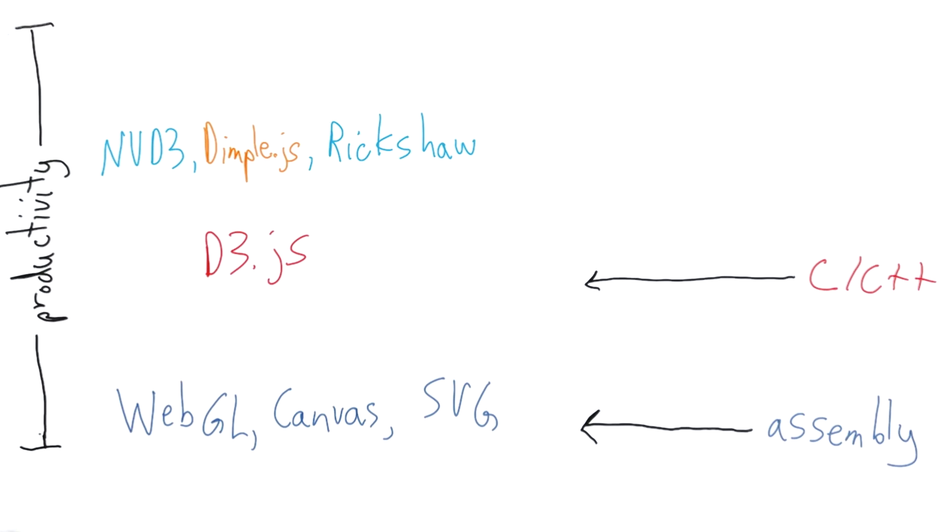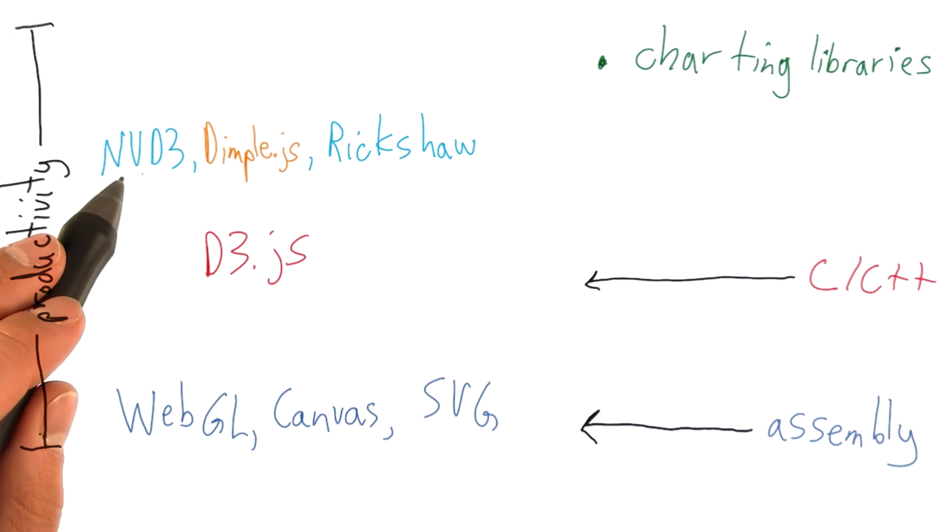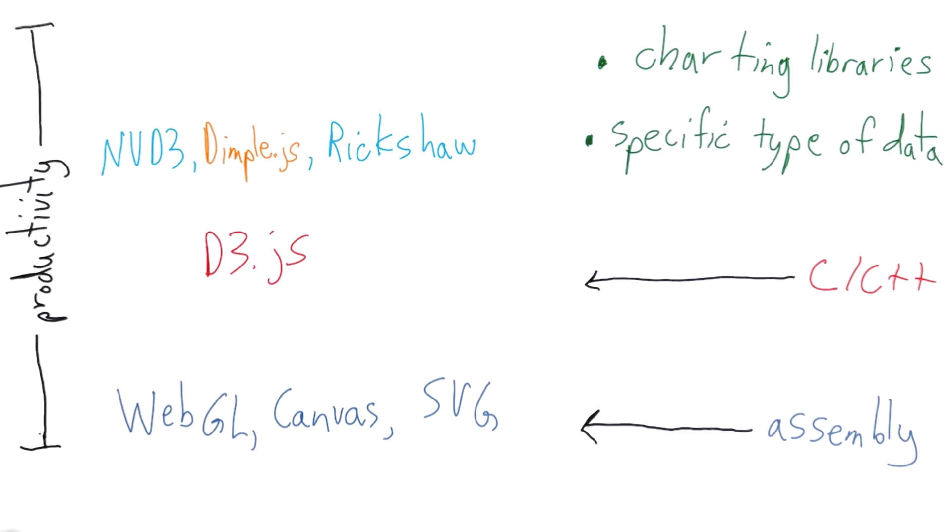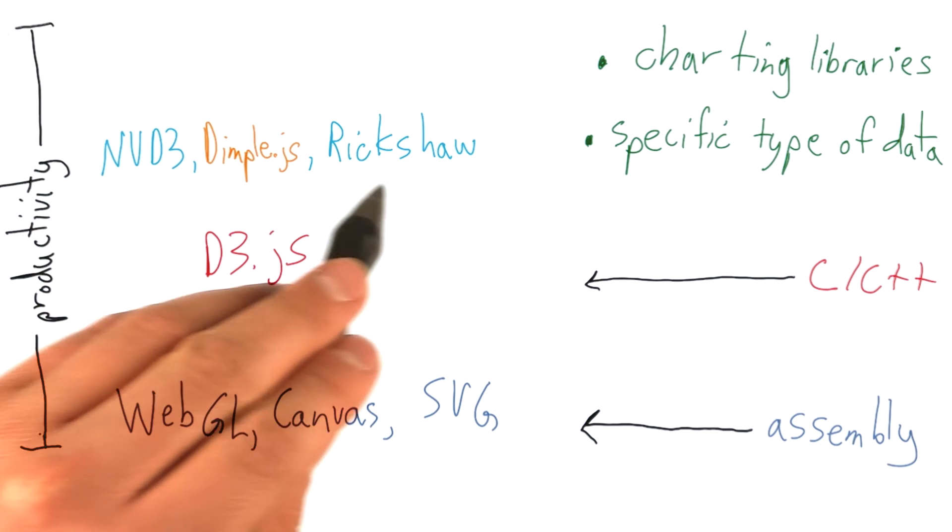You can very easily compose d3.js components to build higher level abstractions and libraries on top of it. While it might seem very daunting to navigate the space of every library built on top of d3, they usually fall into one of two categories. They are either high-level charting libraries like nvd3 and dimple.js, or they are tailored to a specific type of data, like rickshaw.